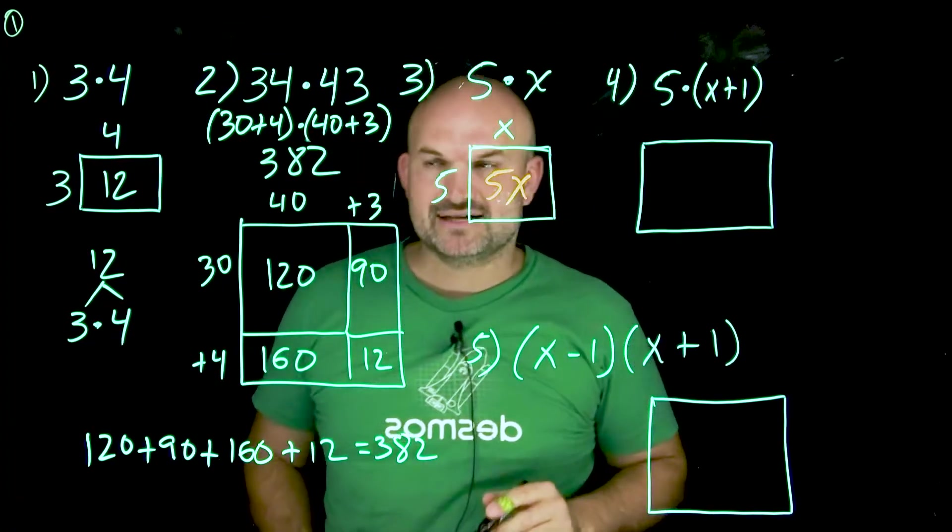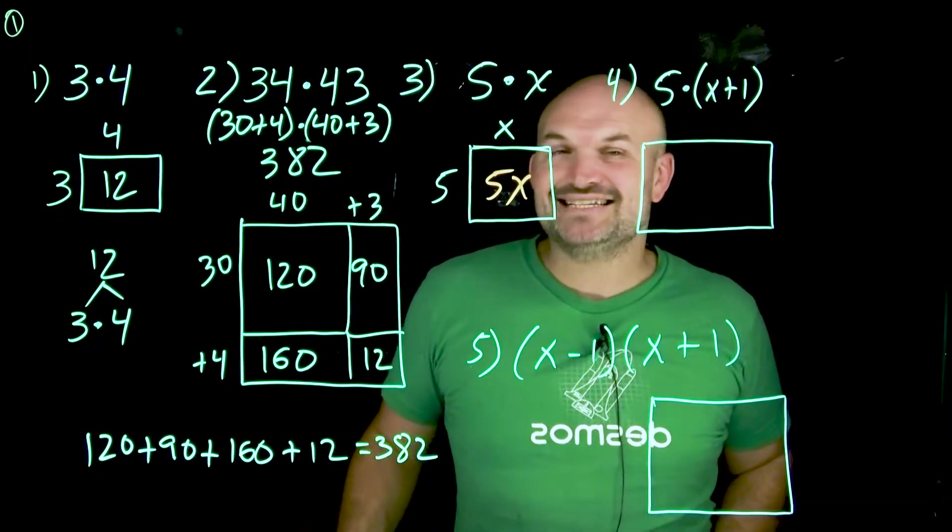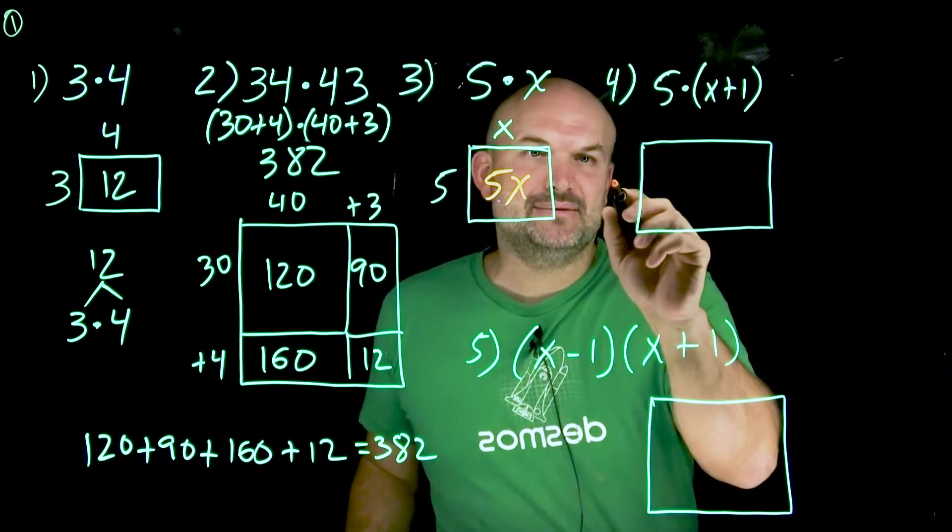But if I want to find the area here of five times X, that is just going to be five X, right? The product of your length times your width. Now over here, what about when we add some things to our variables? Well, again, kind of think about this.